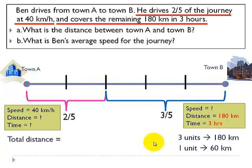The first question is what is the distance between town A and town B? The total distance is given by five units which is 5 times 60 equals 300 km.